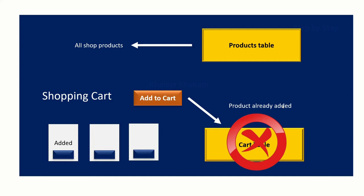Later when we click on checkout we can do payments and everything. So this is the scenario we are going to build — the products table holds all products, and the cart table holds only those products clicked as 'Add to Cart.' Understanding this scenario is very important because this is exactly what we are going to do in our code. From the next session we will start the step-by-step process to construct our entire cart.